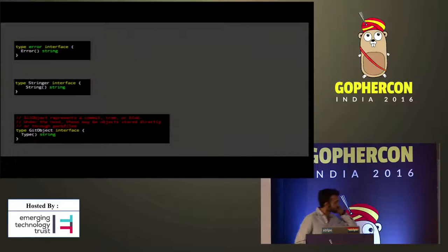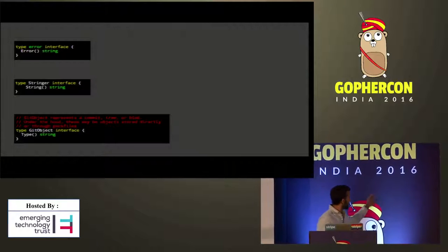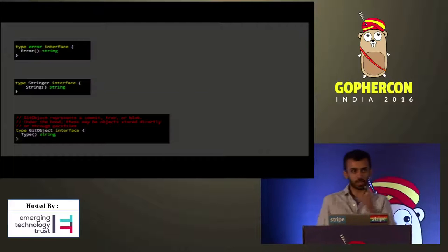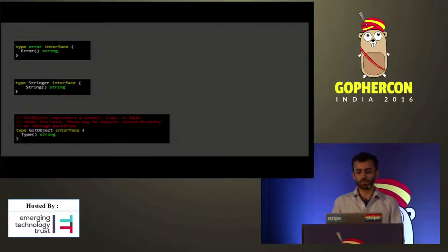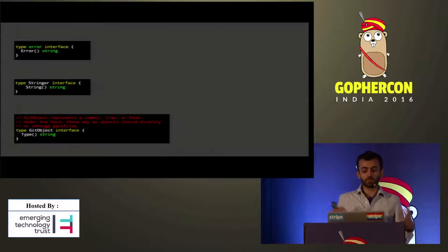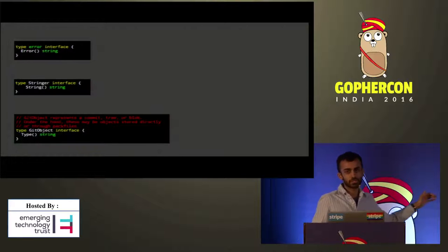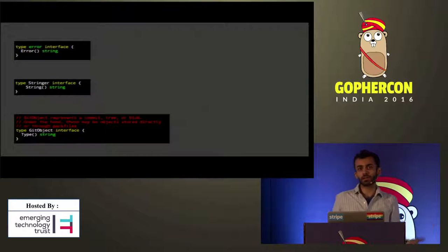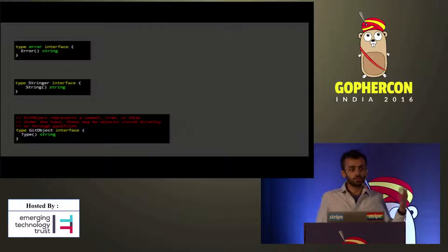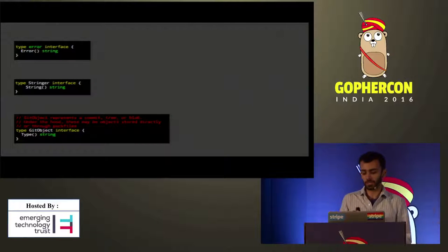These are three basic interfaces. Error needs no explanation — it's easily the most widely used interface in Go, and the other two work similarly. Any type that provides a method matching one of these exact method signatures will satisfy that corresponding interface. You don't have to declare it ahead of time. So you might actually have written types that satisfy the stringer or the GitObject interfaces without even realizing it.